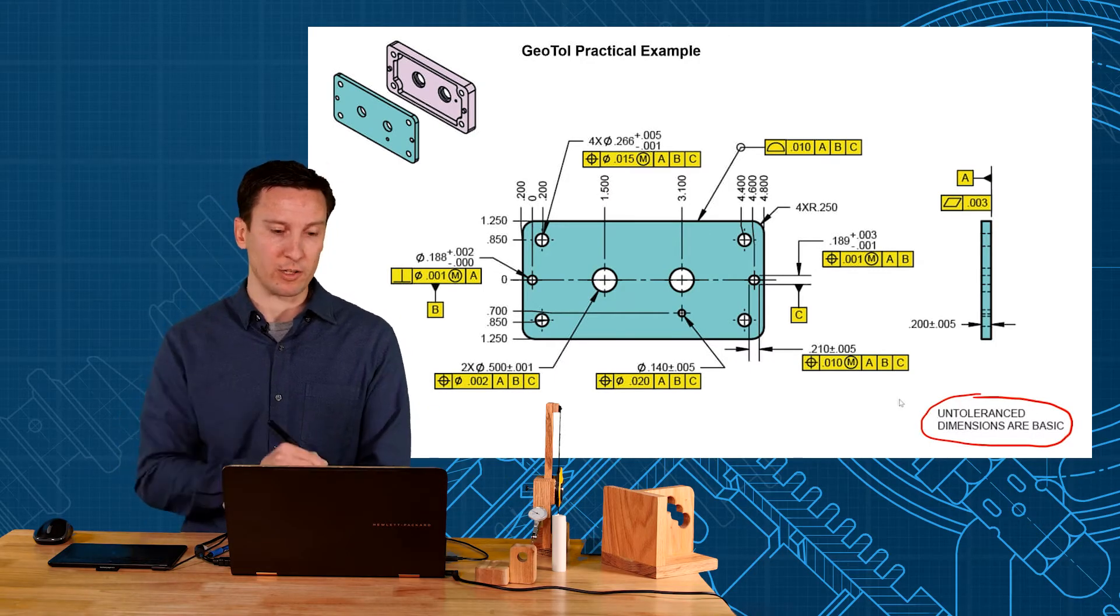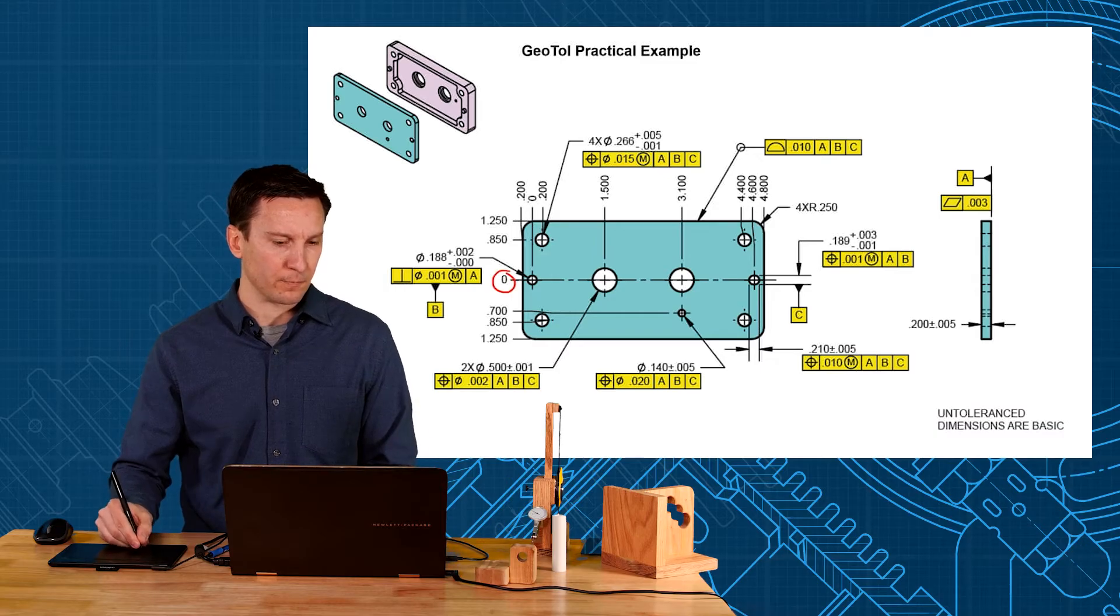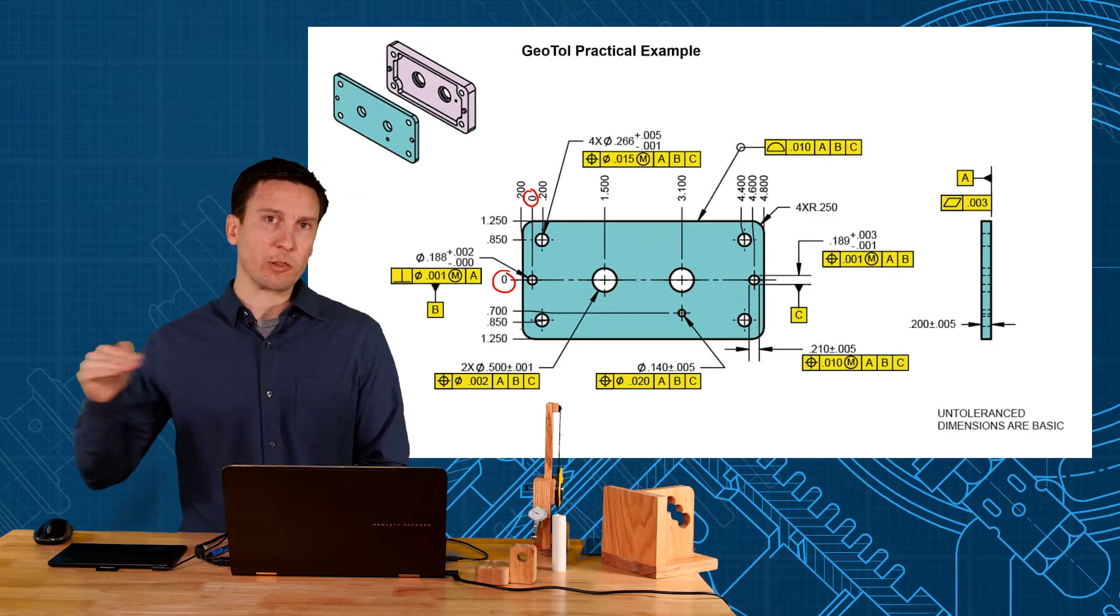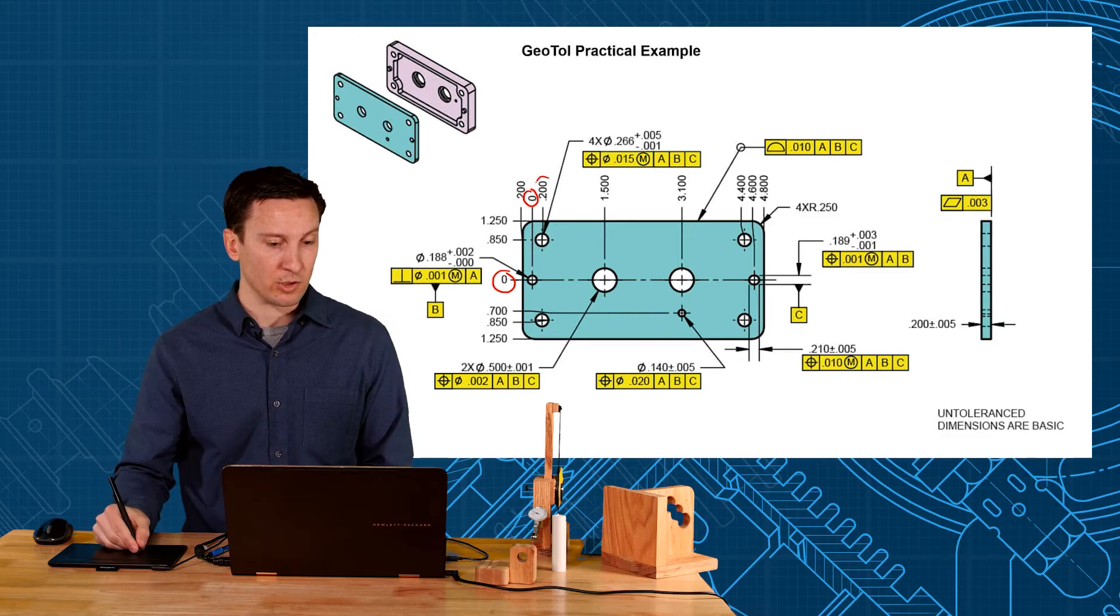And I wanted to put in a plug for ordinate dimensioning using these zero planes. So we can just say that going through that B hole right there is your zero zero. And then these dimensions show how far you're off from that zero zero.